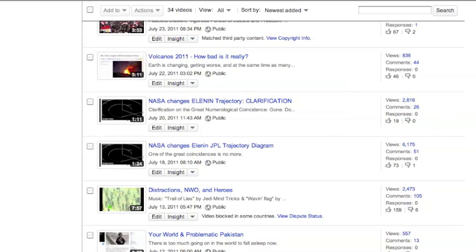Okay, so for a quick replay. We have alignments with earthquakes and solar activity. The name Leonid Elenin. Deep Impact. Kid named Leo finds ELE. Blah blah. NASA Project Deep Impact hits comet. The dark object. Numerology. Then NASA started messing with us.